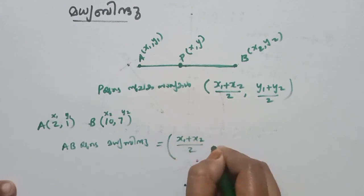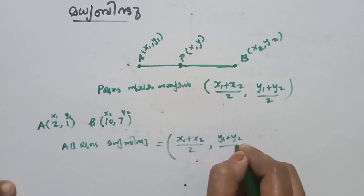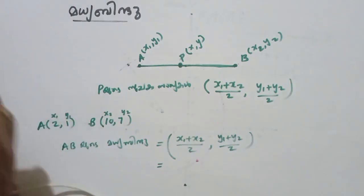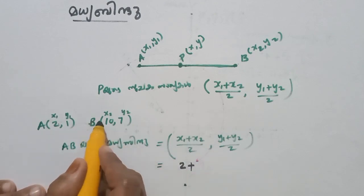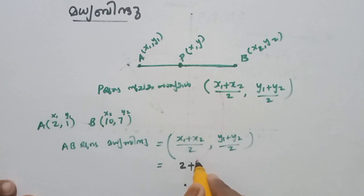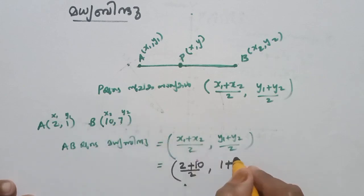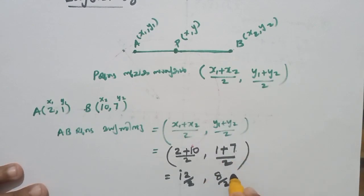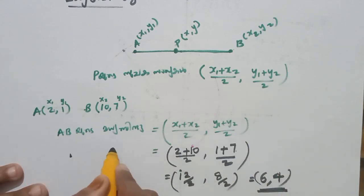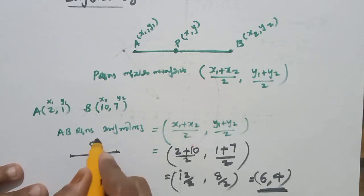x1 plus x2 by 2, y1 plus y2 by 2. X1 is 2, x2 is 10, y1 is 1, y2 is 7. So 10 plus 2 is 12, divided by 2 is 6. And 7 plus 1 is 8, divided by 2 is 4. So P is (6, 4).